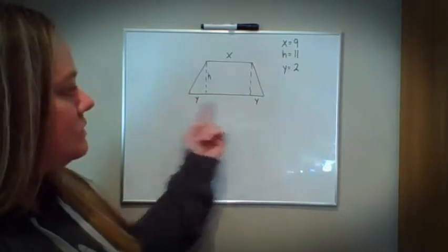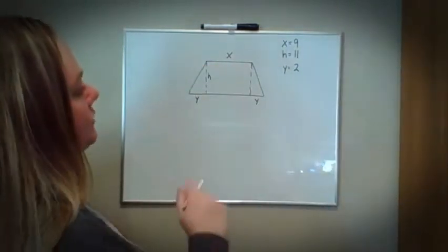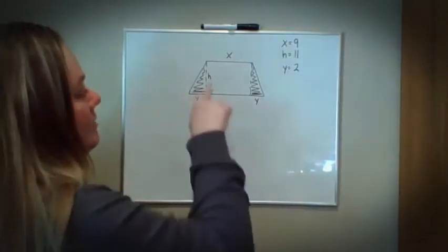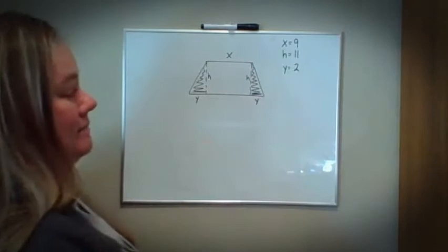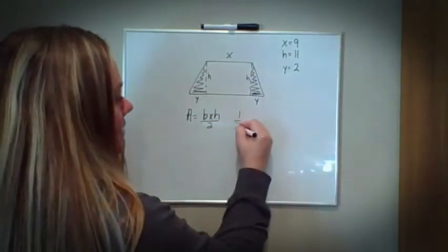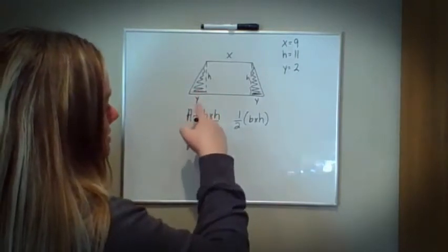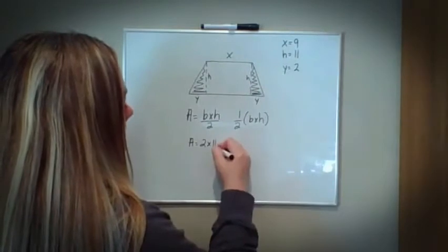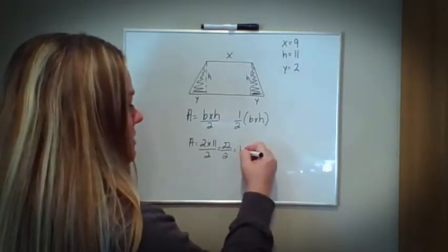I've already set this up to look like the picture. The trapezoid without the lines is here. I'm going to start by recognizing that this shape on the left is a triangle, and this shape on the right is also a triangle. The height is going to be symmetrical — the same on both sides — and the base is going to be the same. Area of a triangle equals base times height divided by two, or one half base times height. My base for both triangles is going to be 2, so area equals 2 times the height of 11 divided by two: 2 times 11 is 22, divided by 2 is 11.